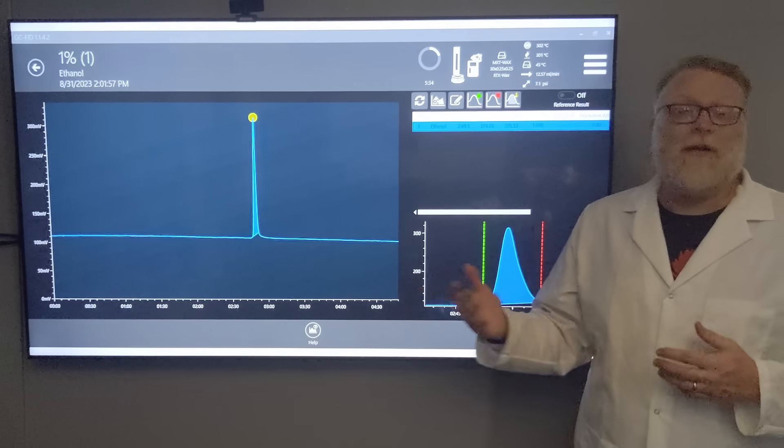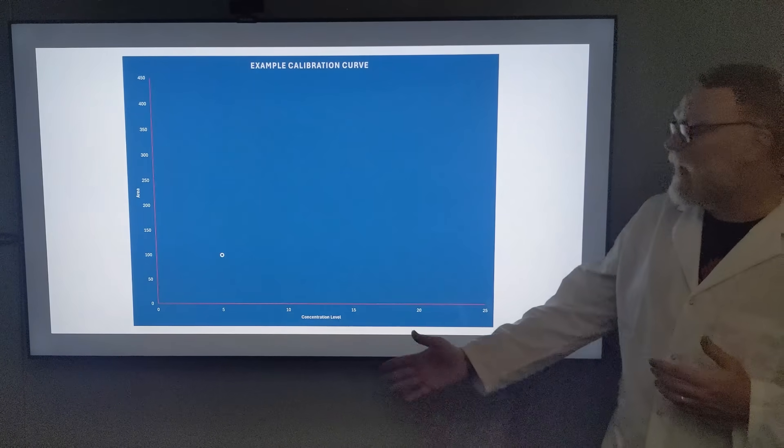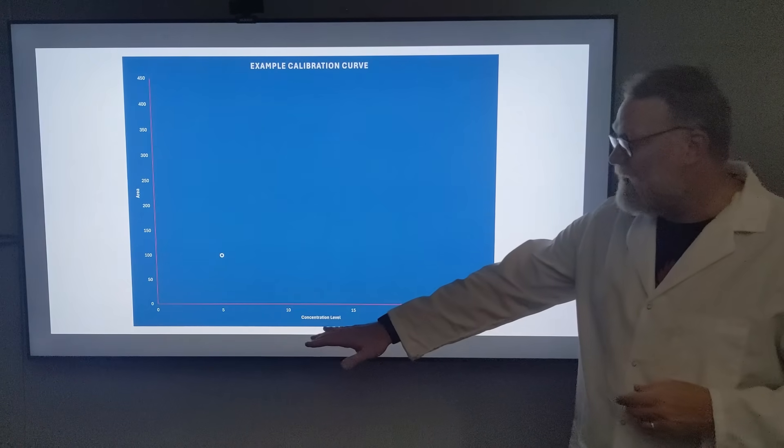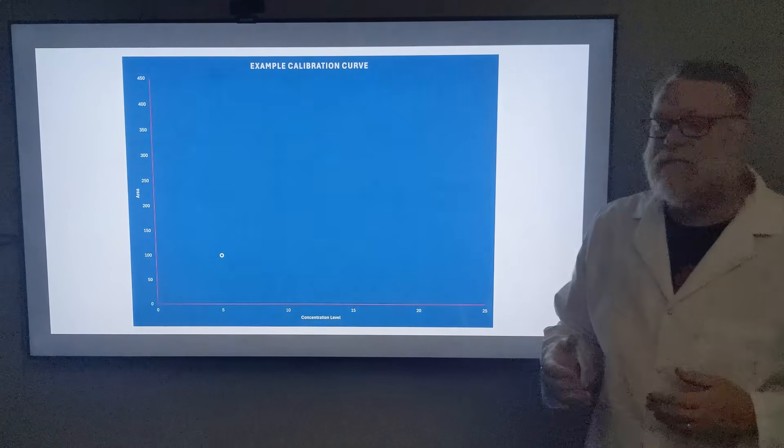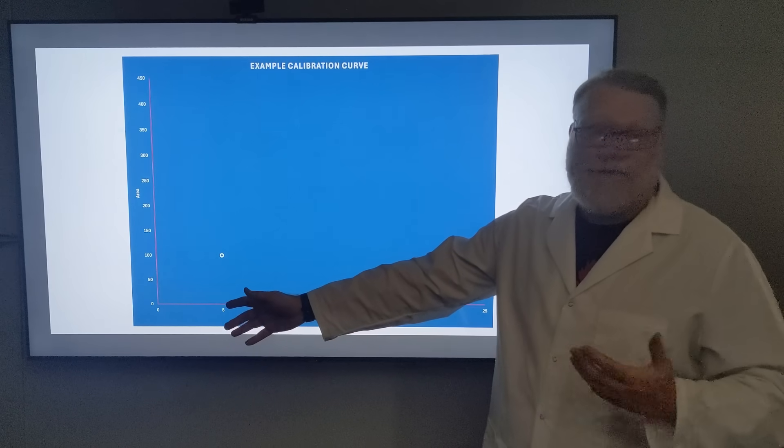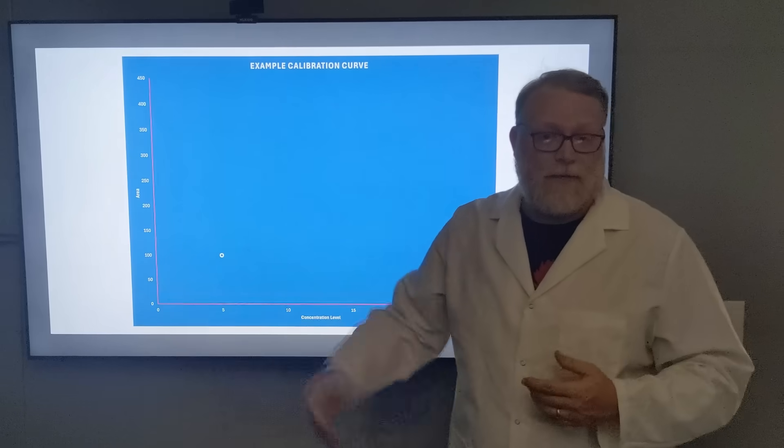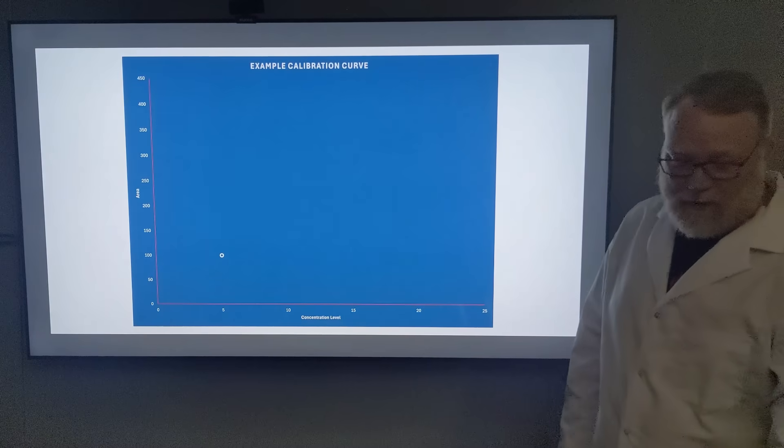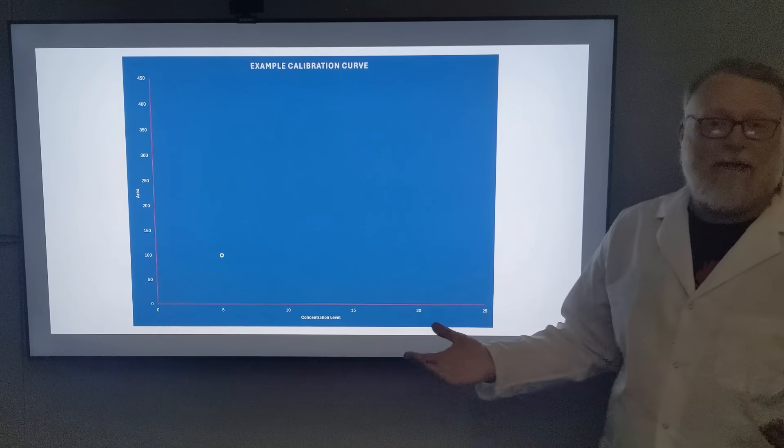In this example, we have our calibration curve with calibration level here and area over here - area versus calibration level. We have a calibration level of 5, which gives us an area of 100. One point doesn't make a calibration curve, so we have to add more.